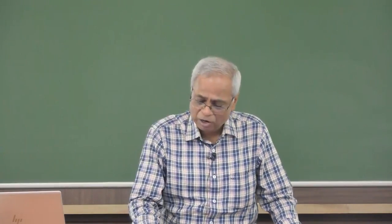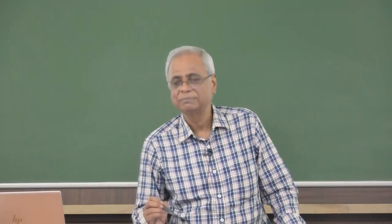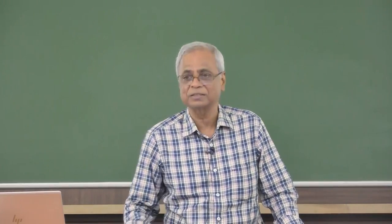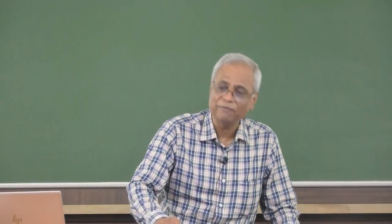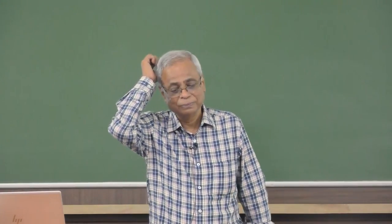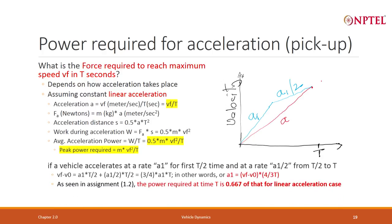And later on, travel at lower acceleration. So can I split into a₁ and a₁/2? What happens to the power requirement? If you do this — I have given this problem in assignment number 1.2 — the average power requirement changes.